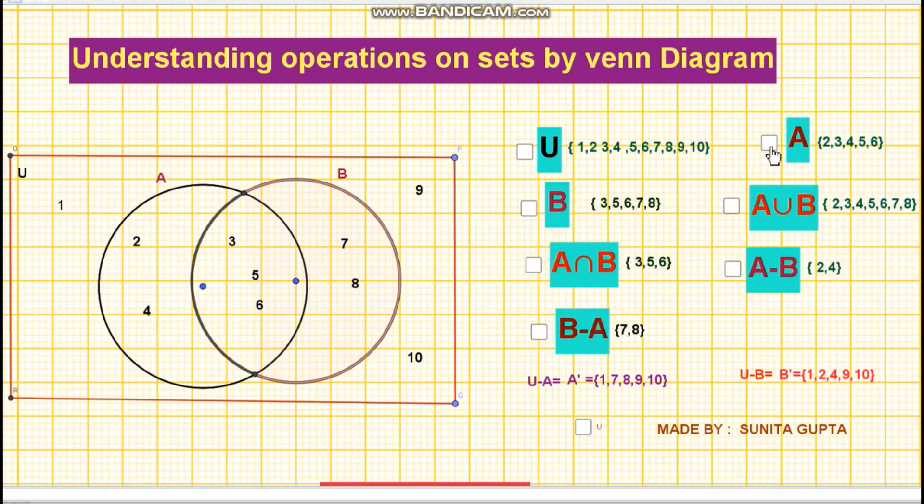This is our set A. The shaded region as shown on your screen. So elements are 2, 3, 4, 5, 6.